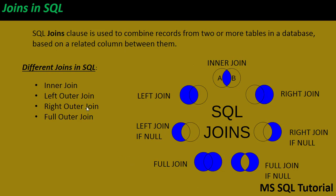Now we will see what are the different types of joins available in SQL Server. We have four types of joins: inner join, left outer join, right outer join, and full outer join. In some databases, left outer join is called left join, right outer join is called right join, and full outer join is called full join. The picture on screen shows all four join types.